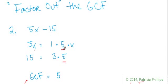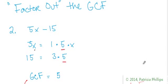The only thing that these two terms — these two monomials — have in common is 5. So the greatest common factor is simply 5. That's what we did before in the first problem. But the question here is different: the question says to factor out the greatest common factor.